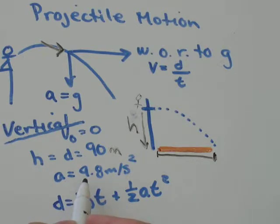That would be 90 meters. Acceleration is acceleration due to gravity, so it would be 9.8 meters per second squared. The best formula to use for this particular question is D equals V-naught T plus one-half AT squared.